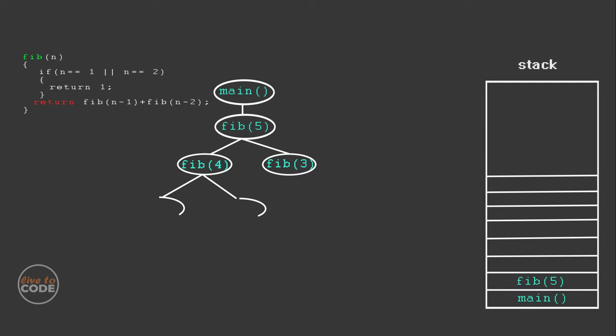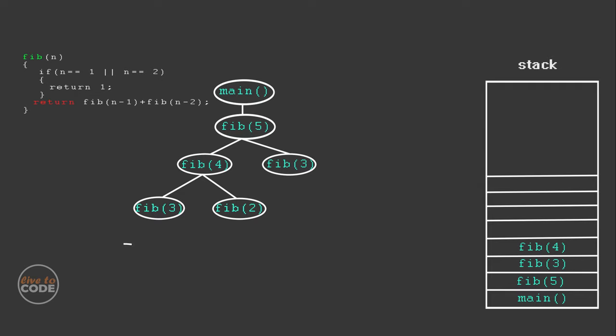Fib of 4 will call itself with values 3 and 2, so fib of 3 and fib of 4 will be pushed into the stack. Fib of 3 will call itself with fib of 2 and fib of 1, so fib of 2 and fib of 3 are pushed into the stack. Now fib of 2 will be called — fib of 1 is pushed into the stack. As per the base condition, fib of 2 returns 1. Then fib of 1 is popped out and returns 1 as well.